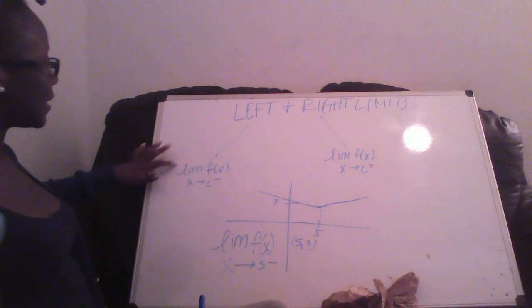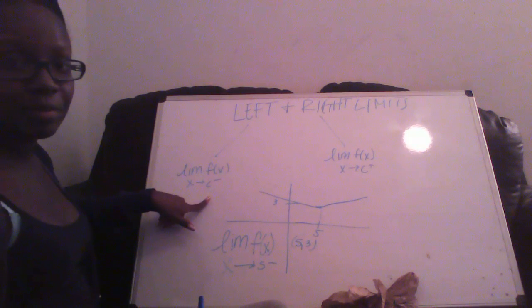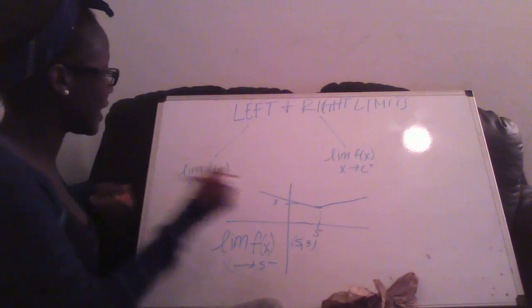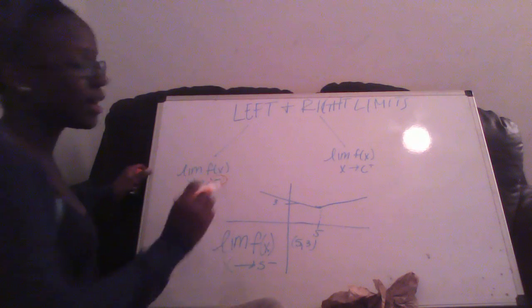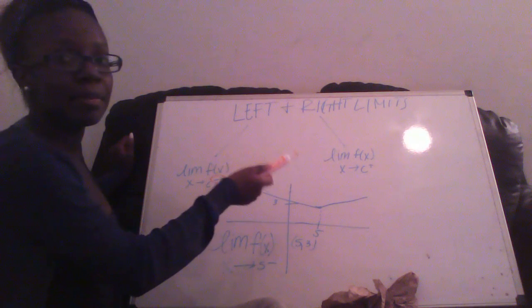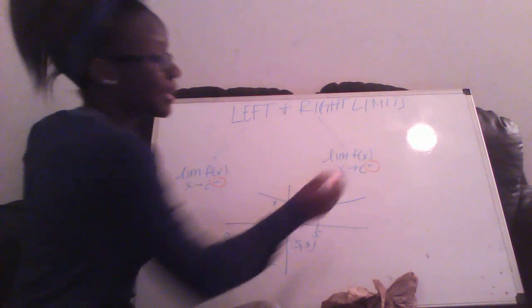For the left limit, you have limit of f with x approaching whatever number from the left side. You will know that it's approaching from the left side because it will have a minus sign behind the number. The same for the right hand side, but it will have a plus sign.